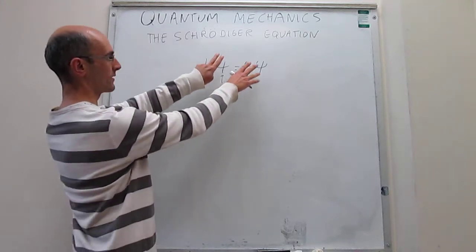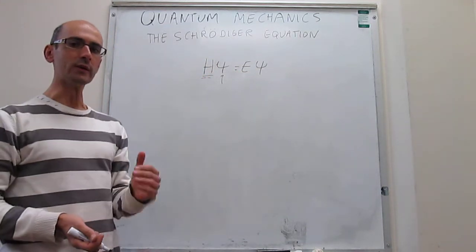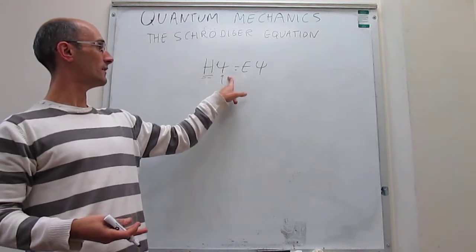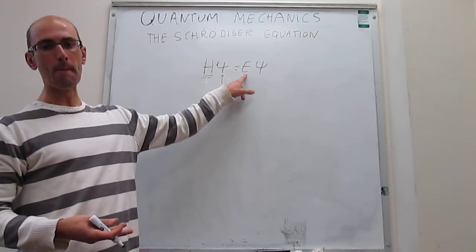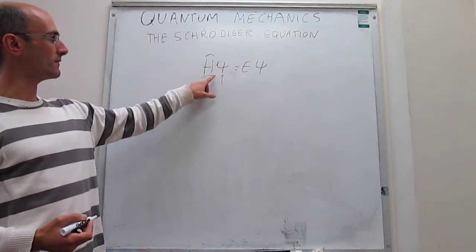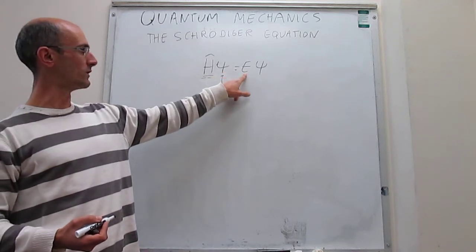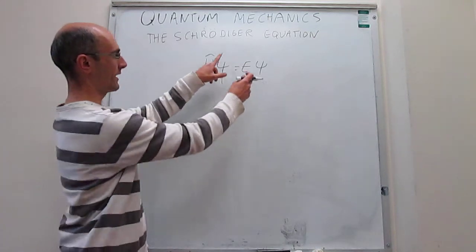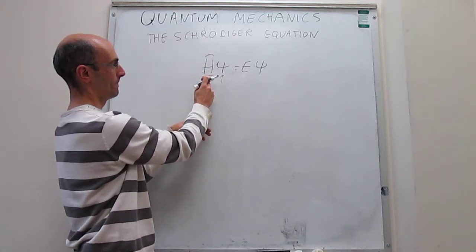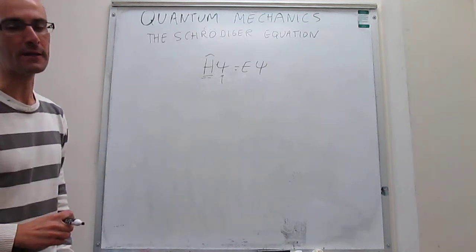Something you might be tempted to do is simply cancel these wave functions and say that the Hamiltonian operator equals the energy. But that is not the case. The way to read this equation is that the Hamiltonian operator is just a bunch of mathematical operations that, when you apply them to the wave function, will return the energy multiplied by the wave function. Sometimes the Hamiltonian operator has a hat to signify that these are operations you apply to the wave function, and when you do that you get the energy multiplied by the wave function. That's why you can't cancel this — there's no product here.